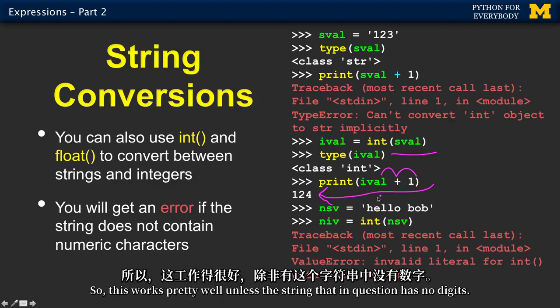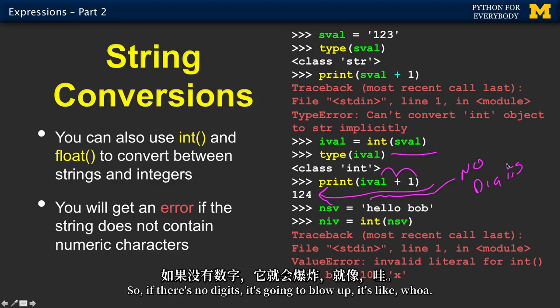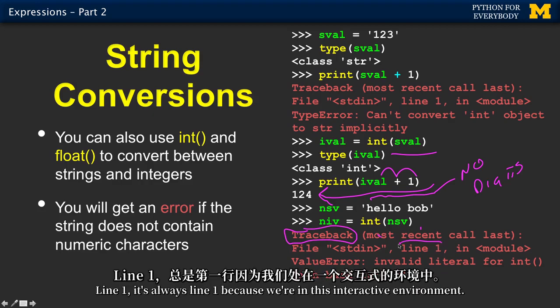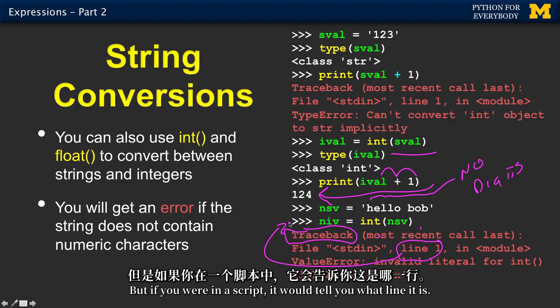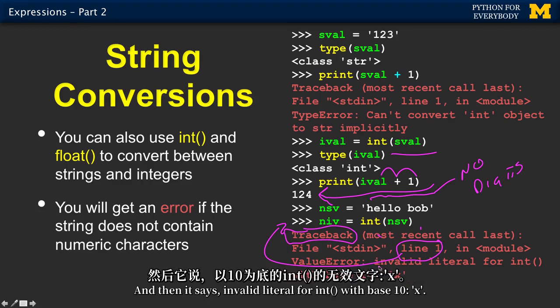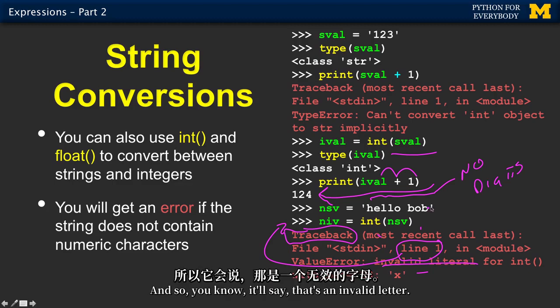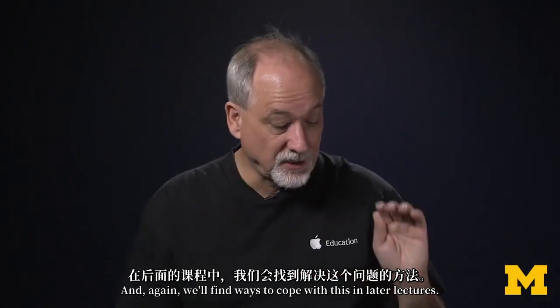So this works pretty well unless the string in question has no digits. If there are no digits, it's going to blow up. It's like, whoa! Now, let's read it. Traceback means I quit. Where? Line one. It's always line one because we're in this interactive environment. But if you were in a script, it would tell you what line it is, and then it says invalid literal for int with a base 10 x. And that's like, okay, it's not working very well. And so, you know, say, oh, that's an invalid literal. And again, we'll find ways to cope with this in later lectures.